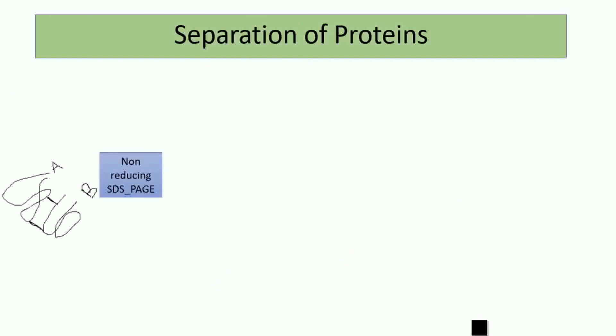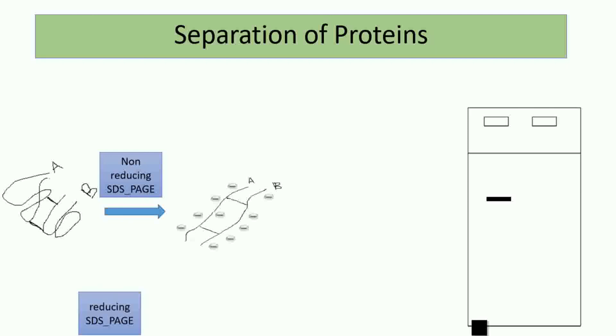In non-reducing SDS PAGE, we get negatively charged, stratified, linked polypeptide chains A and B represented by one band. In reducing SDS PAGE, those chains are separated and represented by two different bands. Those bands have lighter weight and move much faster in the gel compared to the non-reducing form.